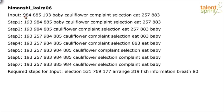Look at the input — it has a combination of words and numbers: 984, 885, 193, 257, 883, and words like baby, cauliflower, complaint, selection, eat. There is a step-by-step process and the last step is step 7.